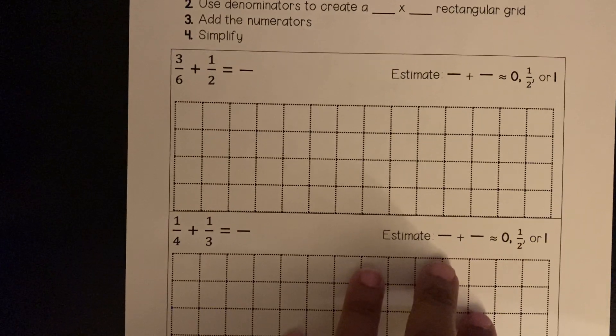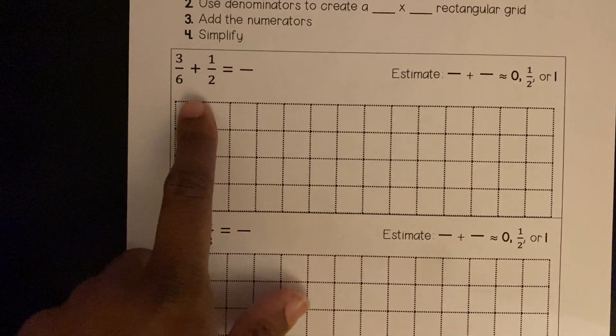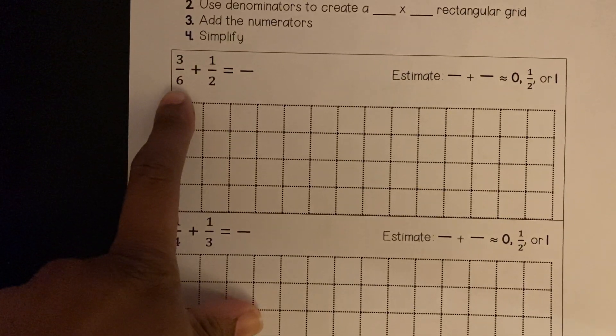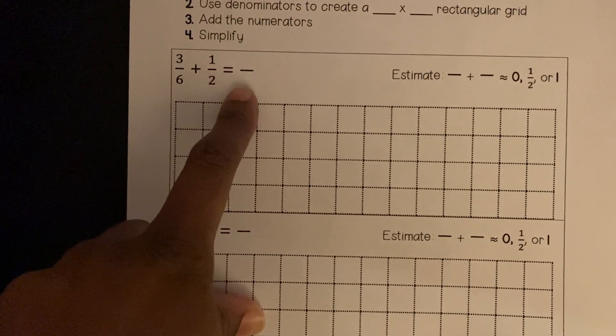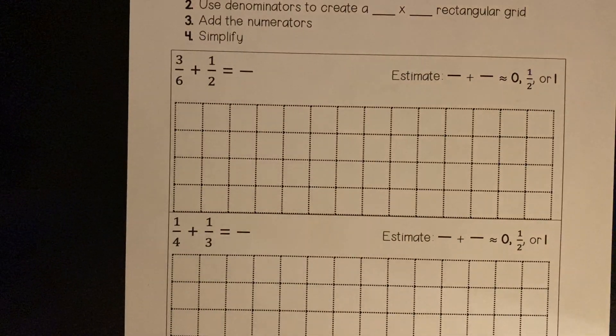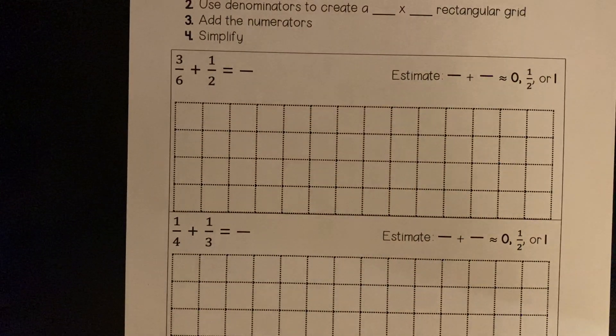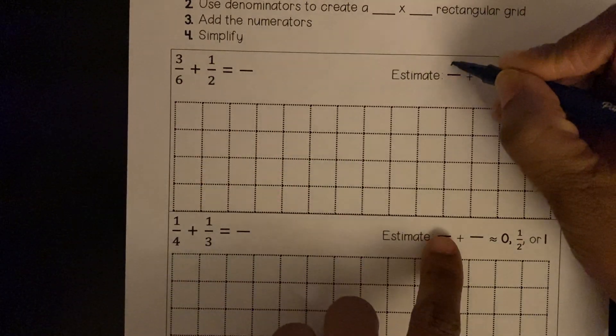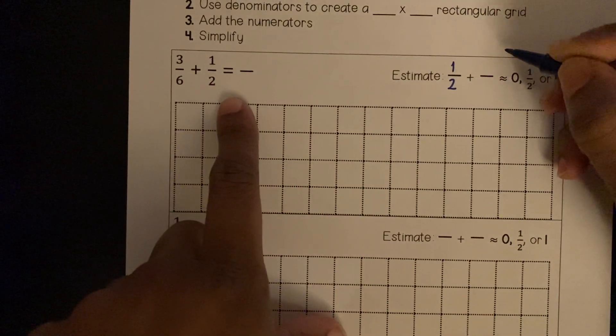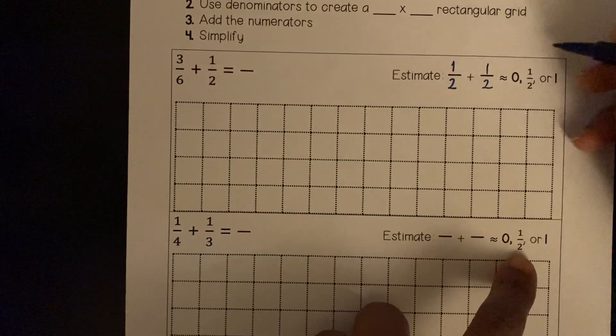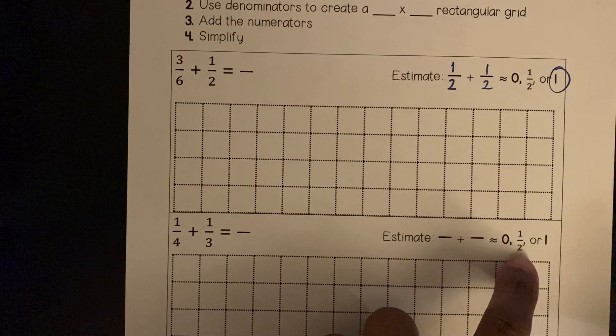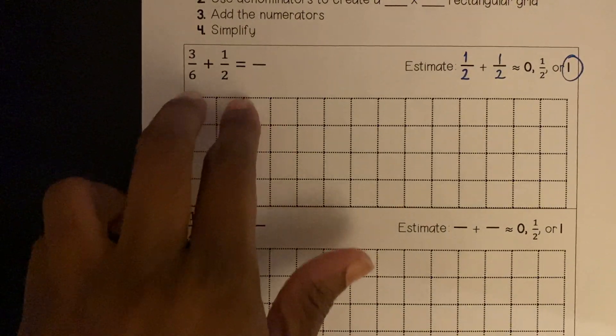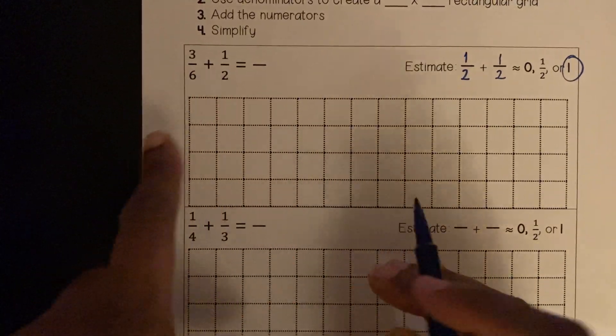So I'm starting with a fairly simple problem because I know that 3 is half of 6, which means that it's 1/2, and 1/2 plus 1/2 is 1. So I want to use a simple example to model a harder concept. 3/6 is 1/2 and 1/2 is also 1/2. 1/2 plus 1/2 is about 1, so my sum should be 1. I'm going to use the denominators 6 and 2 to make a 6 by 2 grid.